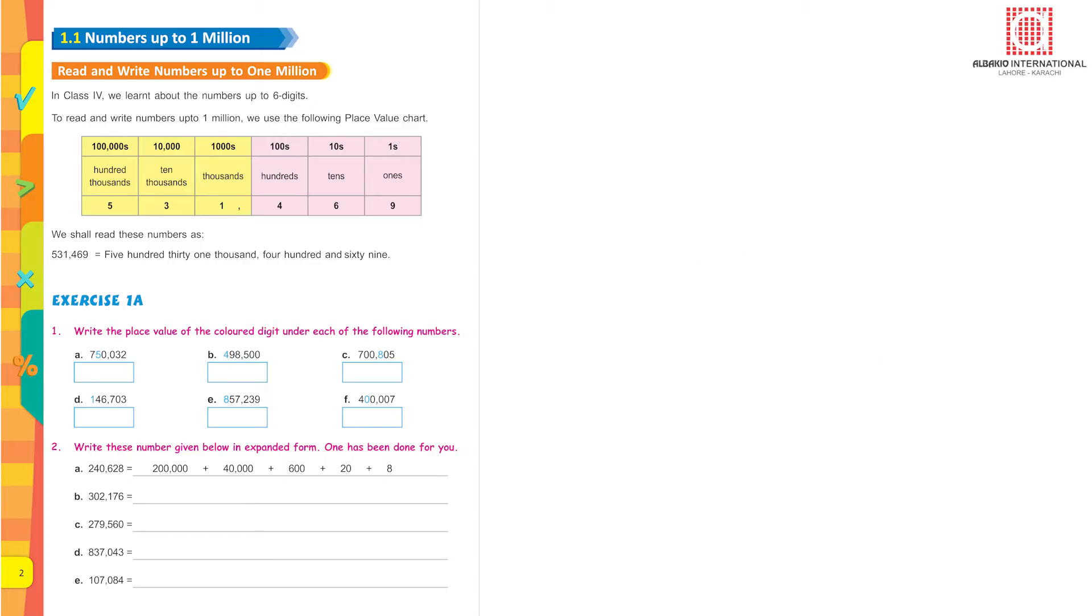Similarly, part B, value of 4 is 400,000. Value of 8 is 800. Value of 1 is 100,000. Value of 8 is 800,000. Value of 10,000. Value of 0 in part F is 0, 100,000. That means the value of 0 is 0.